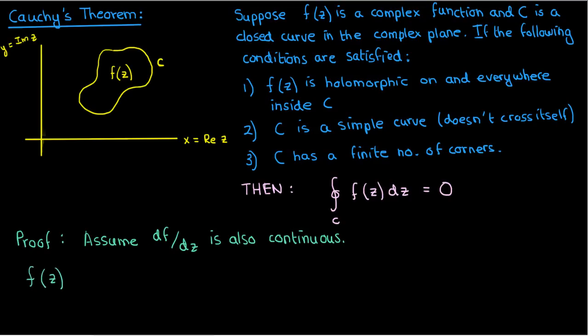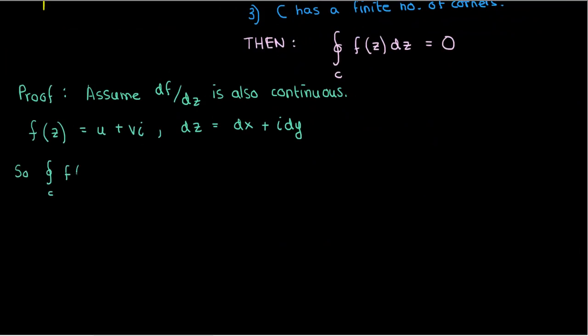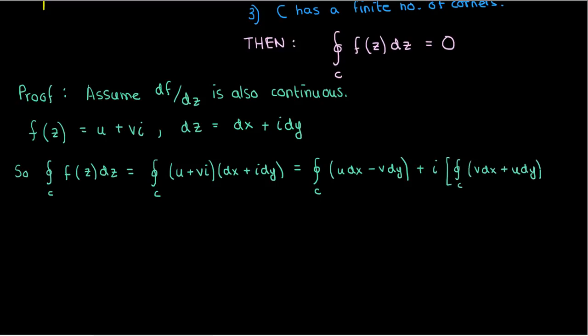As usual, we can write a complex function f as a composition of its real part u and its imaginary part v. We can also write the differential dz as a composition of its real part dx and its imaginary part dy. If we put these together in our integral of f, then we can expand out our expression to end up with the closed integral along c of u dx minus v dy plus i times the closed integral along c of v dx plus u dy.